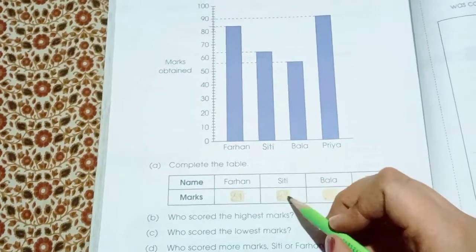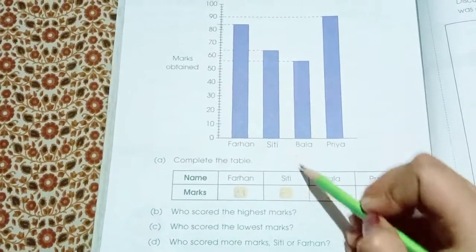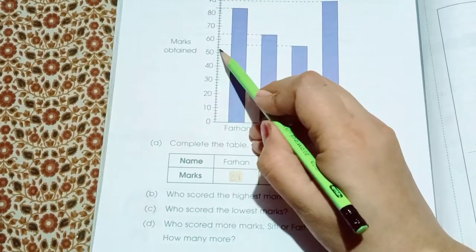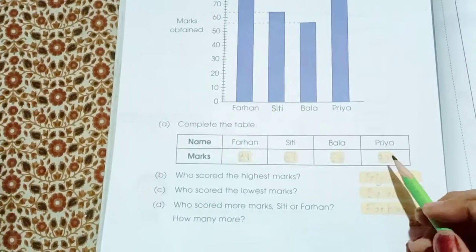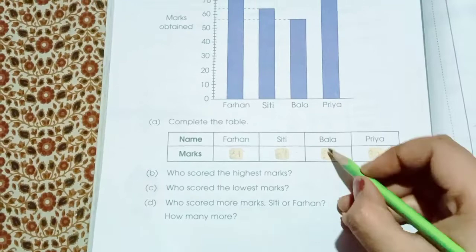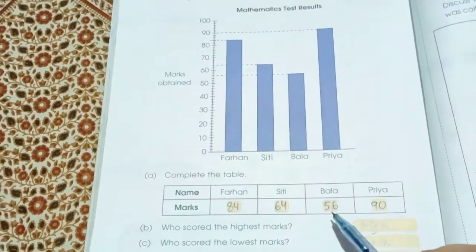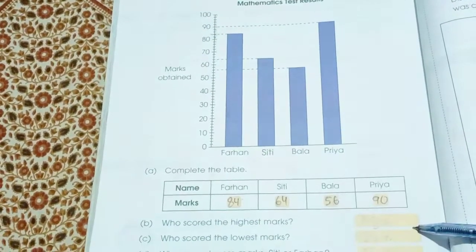Siti is having the score 2, 4, 64. Bala is having the score 2, 4, 6, 56. Bala score 56. Priya score exactly at 90.